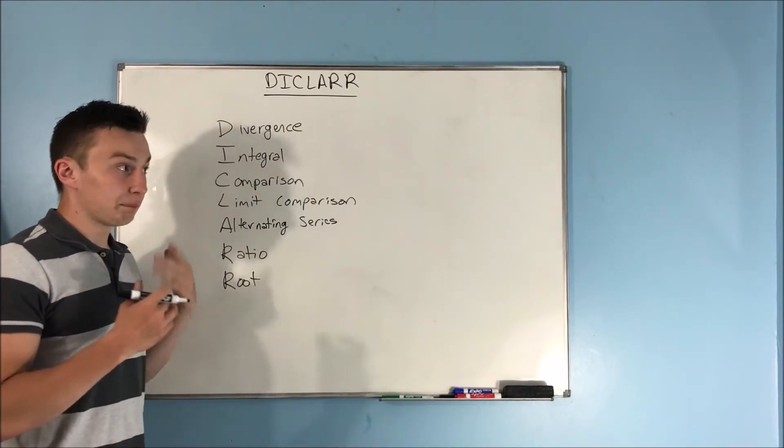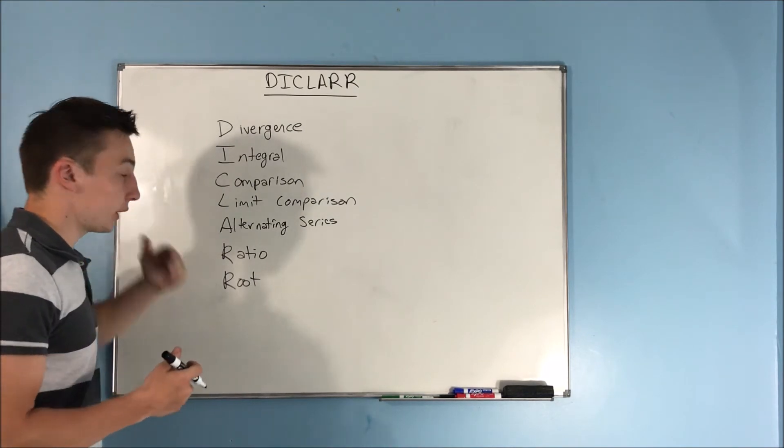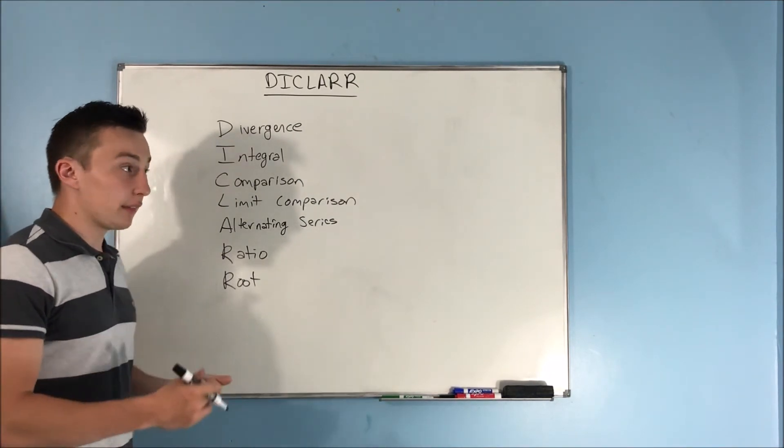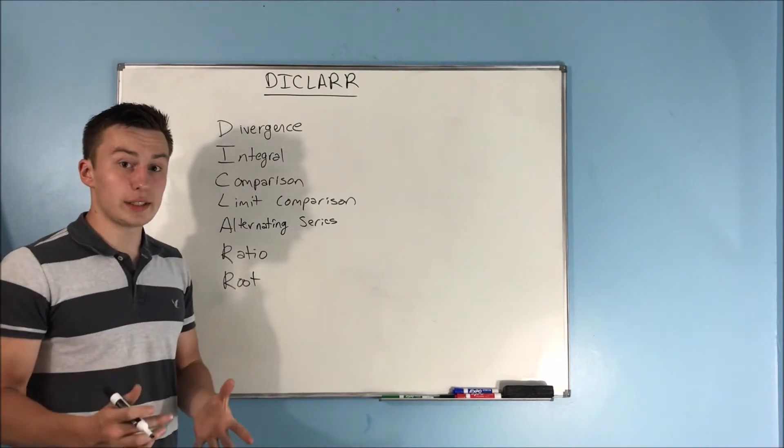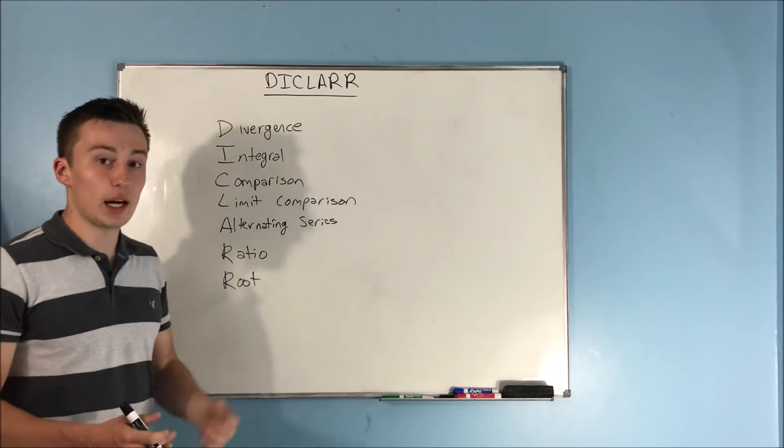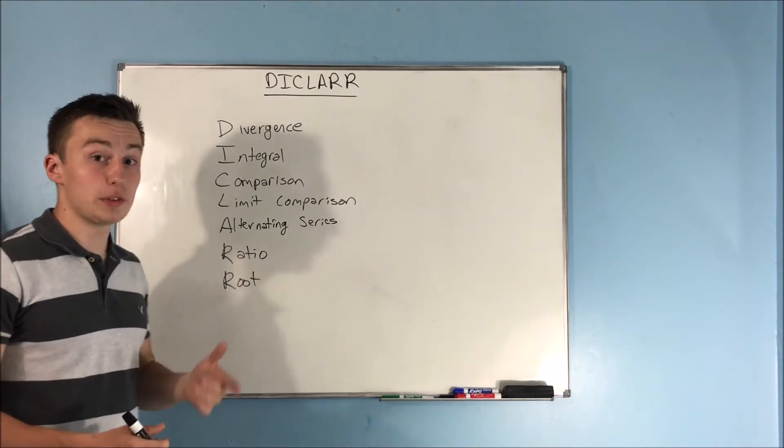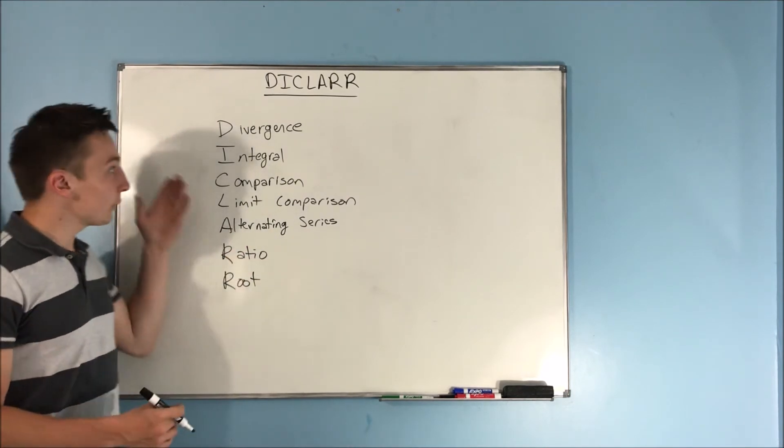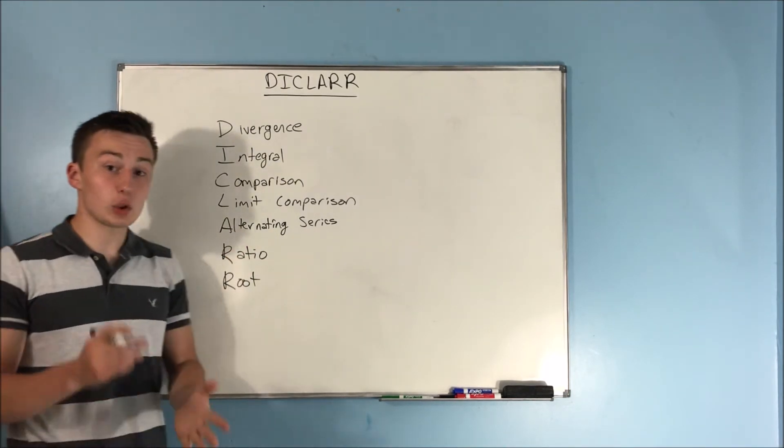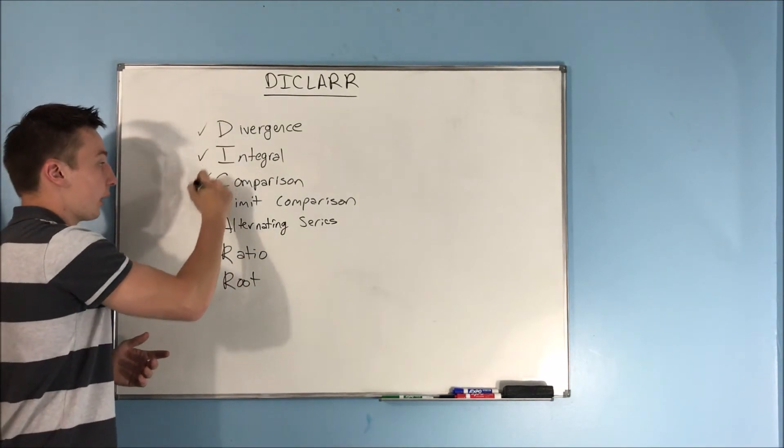Now, if none of those tests are going to work, then I'm going to move on to the alternating series test. Can I prove that this is convergent using the alternating series test? Well, if I can't use any of those, they're all not working out, then I'm going to move on to the ratio test. And if that doesn't work out, I'm going to move to the root test. And that was kind of the order in which I did things. That's what really helped me, just kind of checking these tests off as I went.